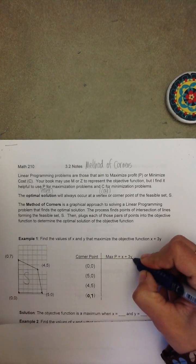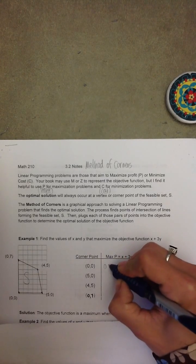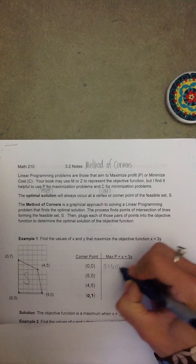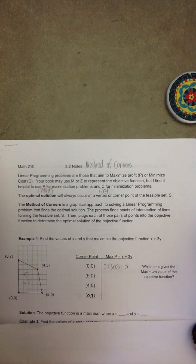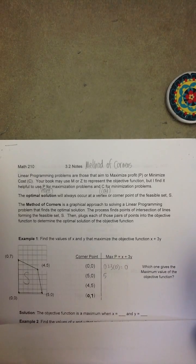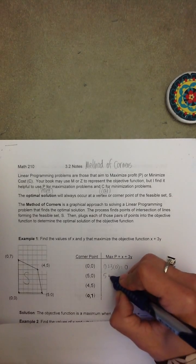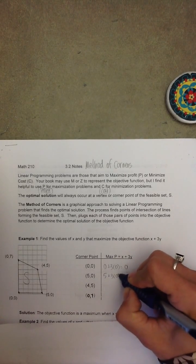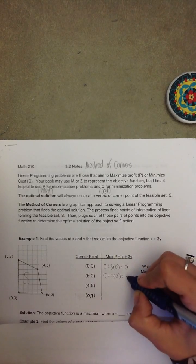So in X plus 3Y, we replace the X with a 0 and the Y with a 0 to get a value of the objective function as 0. Then for (5,0), we again replace the X with its value of 5 and the Y with the value of 0, and we get 5.